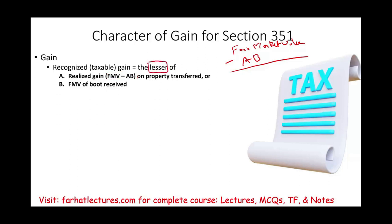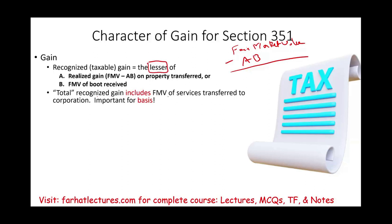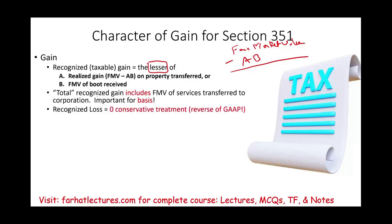The recognized gain — that which is taxable — is the lesser of the realized gain or the fair market value of boot received. Also remember that total recognized gain includes the fair market value of services transferred, because services are taxable. Services are added to recognized gain and increase the basis because you already pay taxes on that. The recognized loss is zero — Section 351 does not trigger any loss recognition, though a shareholder can take a loss, which we'll cover in another session.